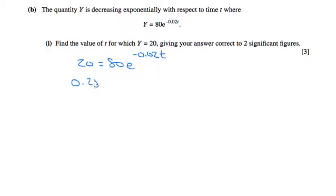So 0.25 equals e to the minus 0.02t. Log both sides again.